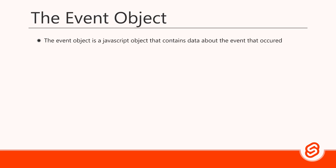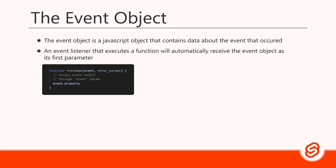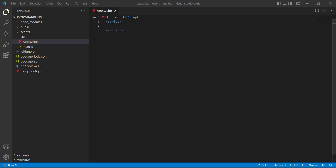Now it's time to discuss the event object. The event object is a JavaScript object that contains data about the event that occurred. For example, on a click event it will contain the exact coordinates of where the mouse was clicked on the page, or whether the Control or Alt keys were pressed during the click. When we bind an event listener that executes a function, that function will automatically receive the event object as its first parameter. We can use it to access any event property or method.